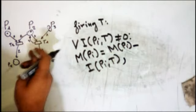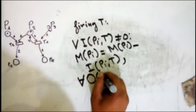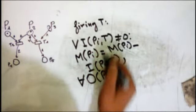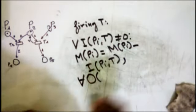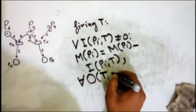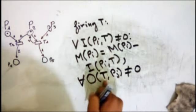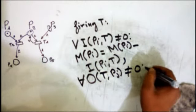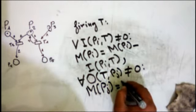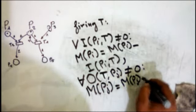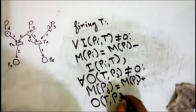Then we add tokens to the output places. For all output places pg where O(t, pg) ≠ 0 — meaning there is an output edge from t to pg — we update the marking: m(pg) becomes m(pg) plus O(t, pg). So we add tokens to each output place according to the output edge weight.